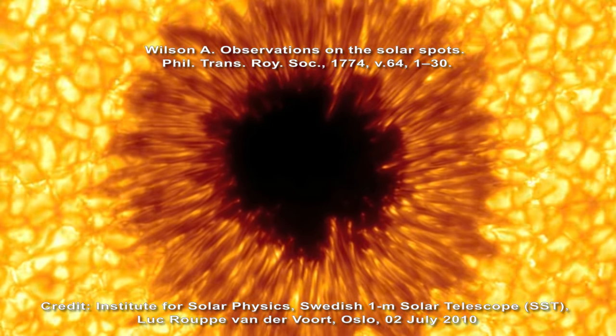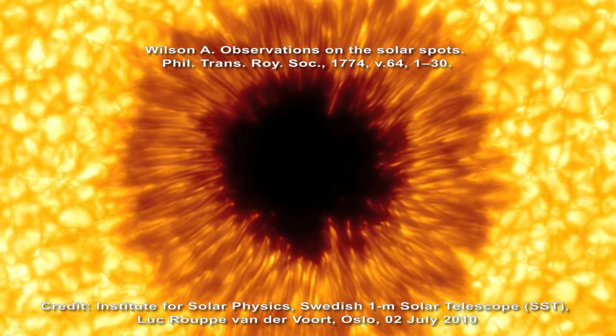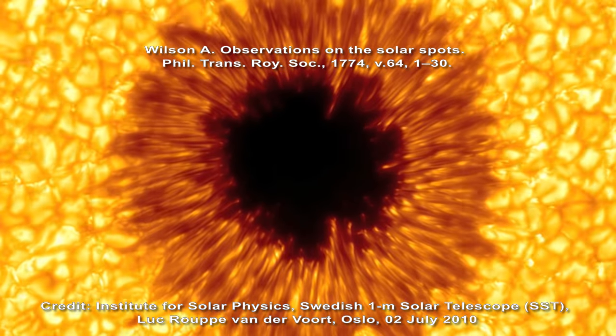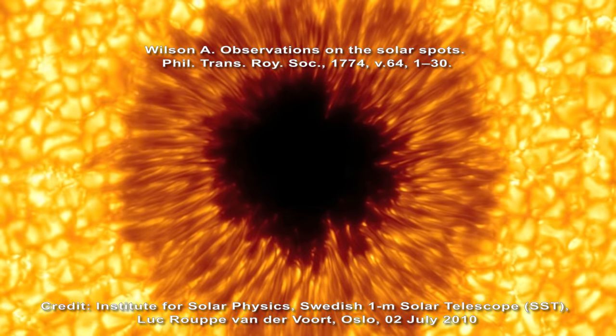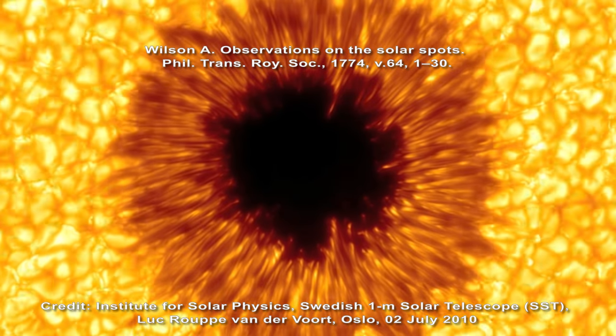At the same time, the standard solar model claims that sunspots are cooler than the photosphere because of their reduced emissivity. Therefore it is natural to hypothesize that the interior of the sun might be cooler than the photosphere.